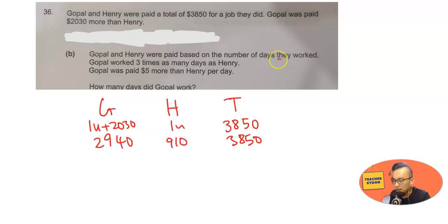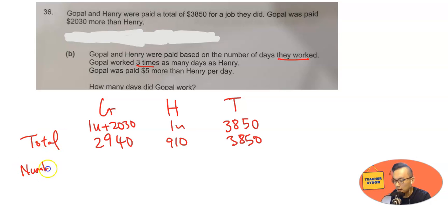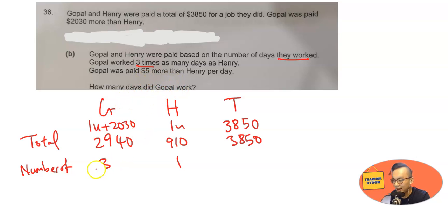Gopal and Henry were paid based on the number of days they worked. Gopal worked three times as many days — so this is the total and this is the number of days — three times versus one time. And Gopal was paid five dollars more than Henry every day.